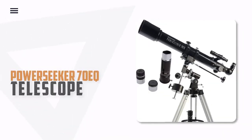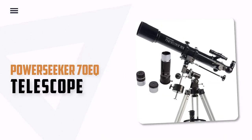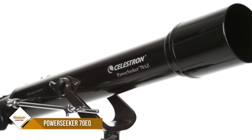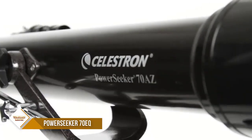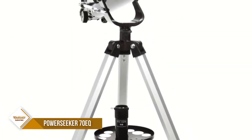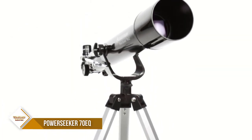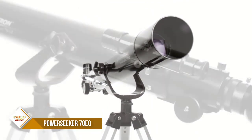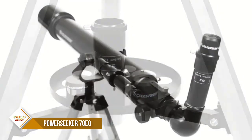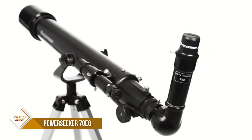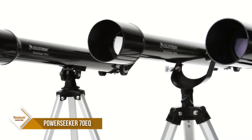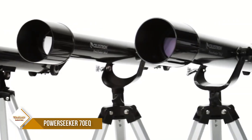Number 4. Celestron Powerseeker 70EQ Telescope. The Celestron Powerseeker 70EQ Refractor is the perfect telescope for astronomy beginners. This powerful telescope has a large 70mm aperture that allows it to gather enough light to see our solar system and beyond. It features fully-coated glass optics and a manual German equatorial mount for smooth and accurate pointing. Setting up the telescope is quick and easy, with no tools required.